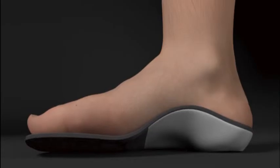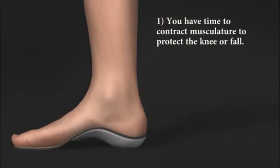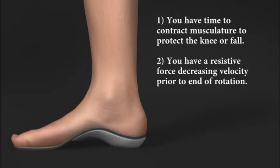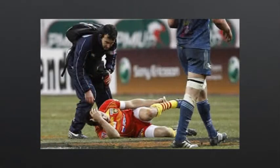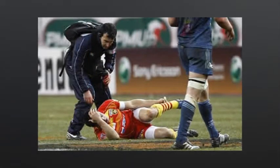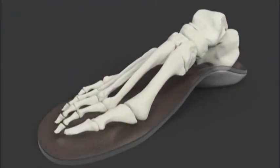When the arch is properly supported, the patient has three things they didn't have previously. Time to contract the musculature around the knee. A resistive force decreasing the velocity at which the patient reaches the end of the range of motion of internal rotation. And proprioceptive feedback from the full contact nature of the support. Once the ACL is torn, the season is over for that athlete. Prevention is the best treatment of all.